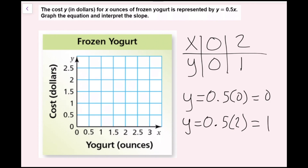Now I have my two points. I'm going to plot them on my graph. So (0, 0) is the origin — that is this point right here. And then my next point is (2, 1), so I'm going to go right 2 and up 1.